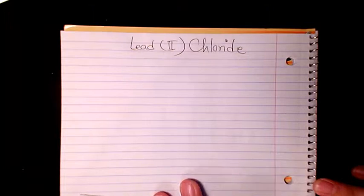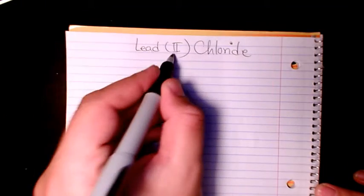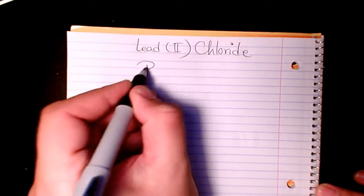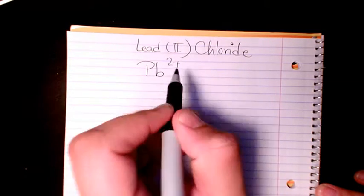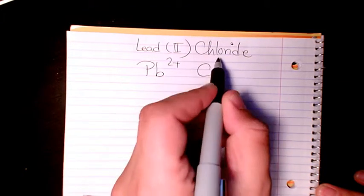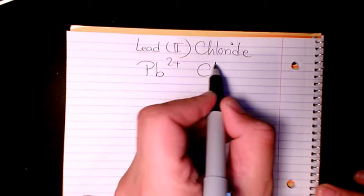So first of all, I start with lead. Lead is Pb and the charge is 2+. And chloride is Cl and belongs to halogen groups, so it's going to be Cl minus.